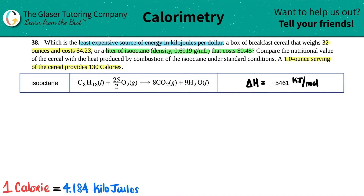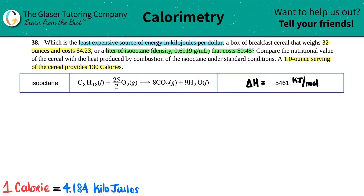Basically, we just have to get these two different things in terms of kilojoules per dollar and then compare them. We want to see which one is the least expensive — which one gives us more energy per single dollar. I'm going to split this up between the two different items.